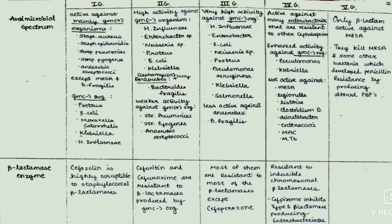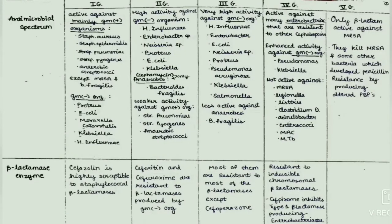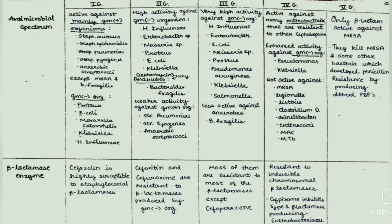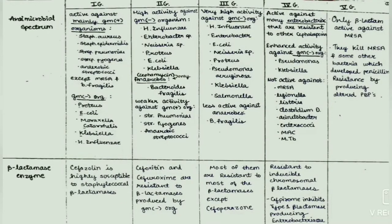The fifth generation cephalosporins are the only beta-lactam agents active against MRSA. They kill MRSA and some other bacteria which developed penicillin resistance by producing altered PBPs. To summarize: first generation has main activity against gram-positive organisms with some gram-negative activity; second generation has high activity against gram-negatives and anaerobes; third generation has high activity against gram-negatives; fourth generation has high activity against Enterobacteriaceae and gram-negatives, especially Pseudomonas; and fifth generation are the only beta-lactam active against MRSA.